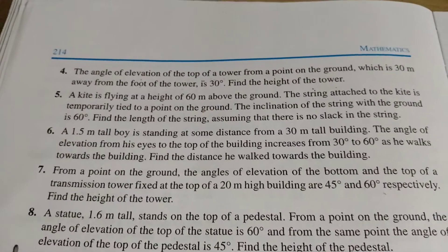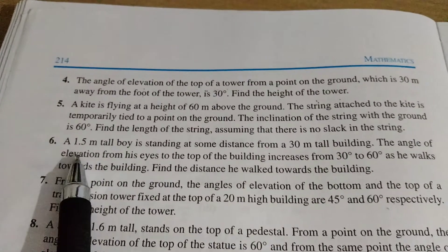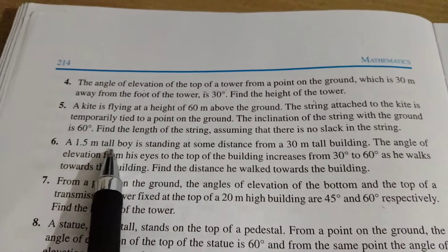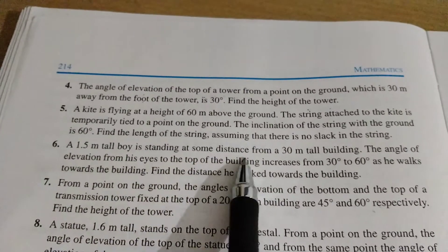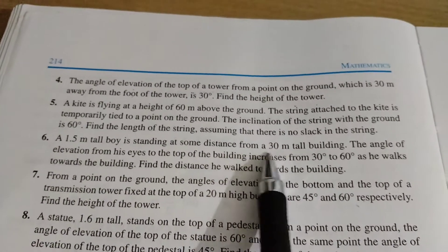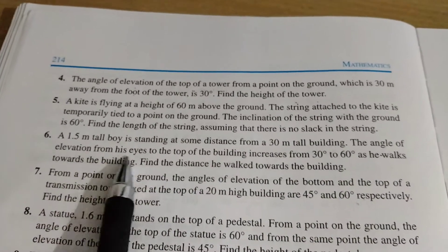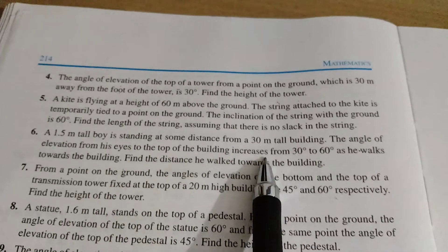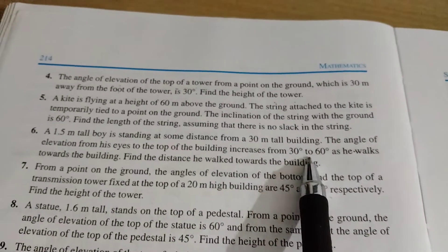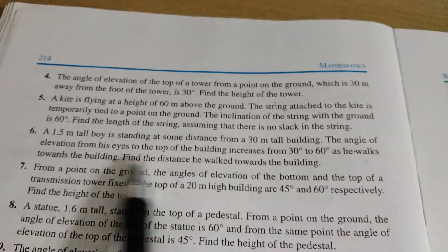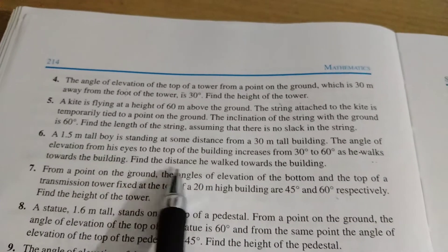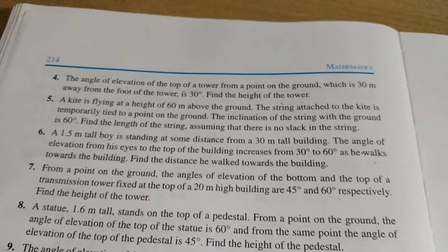Okay, we are going to do 9.1, question number 6. Our question is: a 1.5 meter tall boy is standing at some distance from a 30 meter tall building. The angle of elevation from his eye to the top of the building increases from 30 degree to 60 degree as he walks towards the building. Find the distance he walks towards the building.